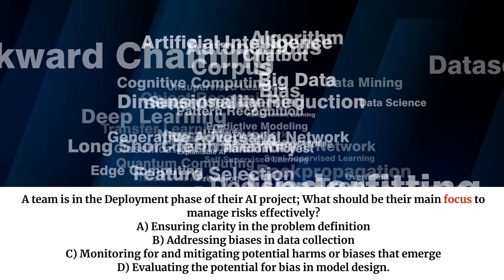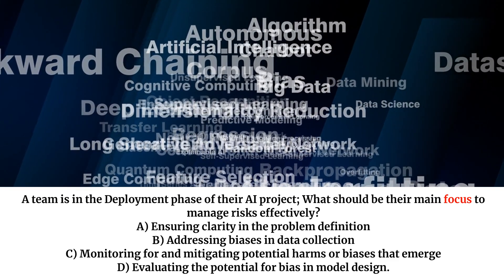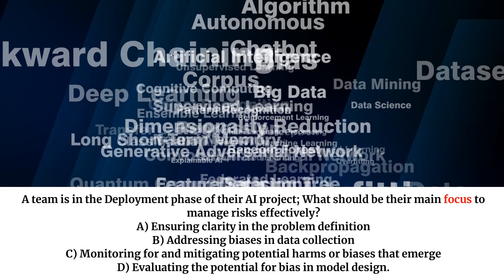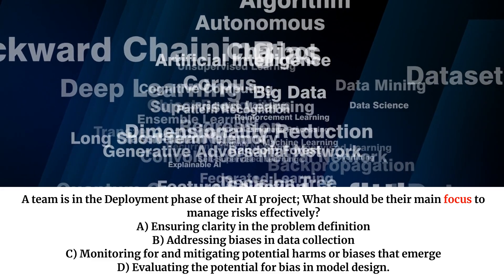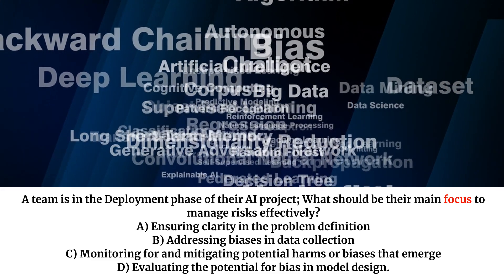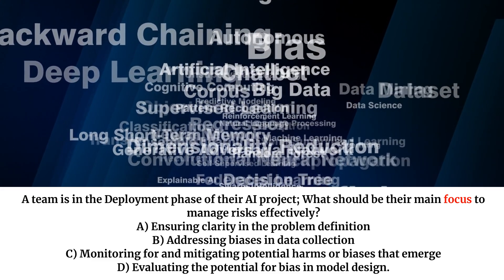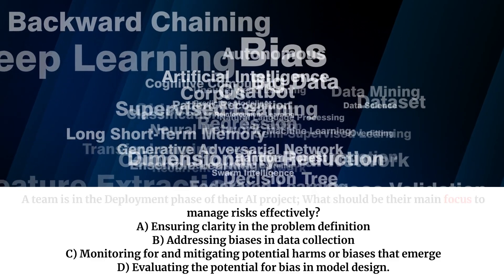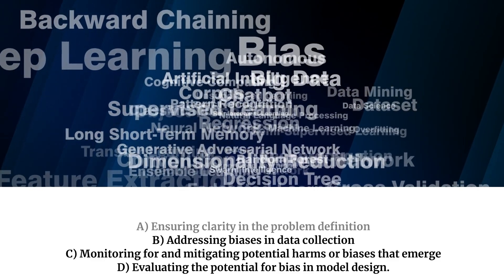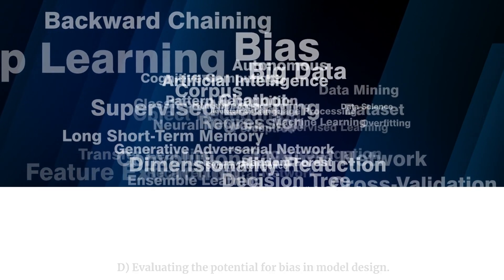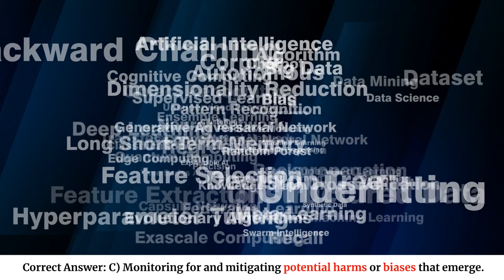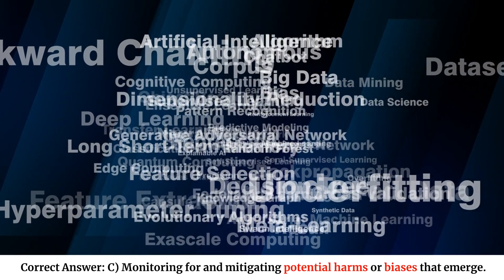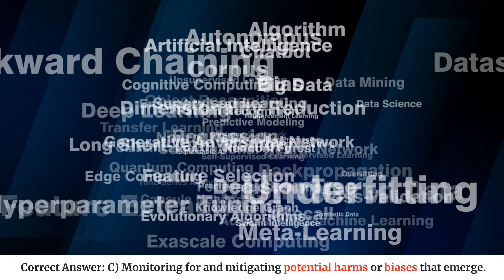A team is in the deployment phase of their AI project. What should be their main focus to manage risks effectively? A. Ensuring clarity in the problem definition. B. Addressing biases in data collection. C. Monitoring for and mitigating potential harms or biases that emerge. D. Evaluating the potential for bias in model design. Correct answer: C. Monitoring for and mitigating potential harms or biases that emerge.